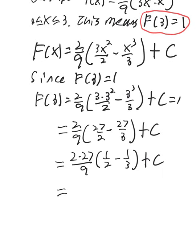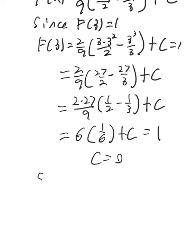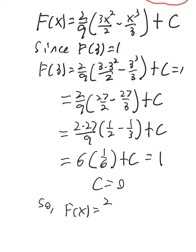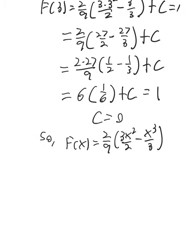All right. So 27 divided by 9 is 3. So we're going to get 6 out here, and 1 half minus 1 third is 1 sixth, plus c. And that's got to be equal to 1, but the 6 times 1 sixth is 1, so c equals 0. So f of x will be equal to the anti-derivative that we wrote down, 2 ninths times 3x squared over 2 minus x cubed over 3. There's our cumulative distribution function.